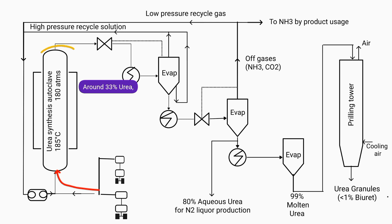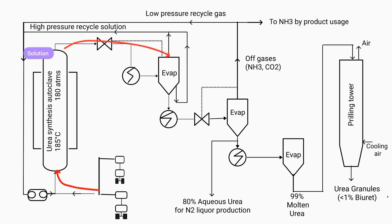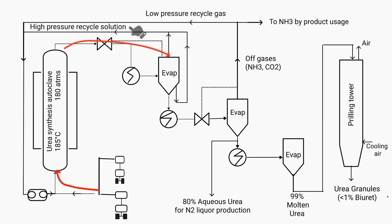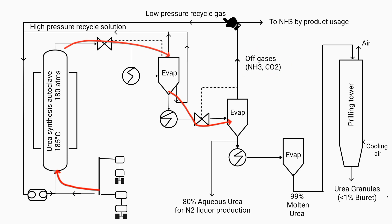To increase the concentration of urea, the solution is sent to evaporators. When the solution reaches the first evaporator, the unreacted ammonium carbonate, ammonia, carbon dioxide, and water vapor present in the solution change into a gaseous state and separate from the solution. They then reach the condenser where they condense into a high-pressure solution, which is sent for recycling. The concentration of urea slightly increases in the solution obtained from this evaporator, which is then sent to another evaporator. Evaporation also takes place in this evaporator, and the off-gases are separated, called low-pressure gas, which can either be recycled or used as a by-product.